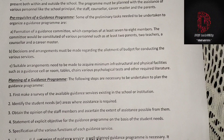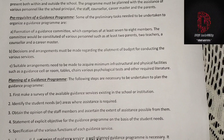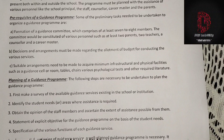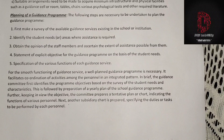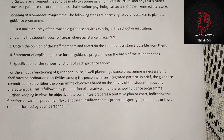Second, decisions and arrangements must be made regarding the allotment of budgets for conducting the various services. Third, suitable arrangements need to be made to acquire minimum infrastructural and physical facilities such as a guidance cell or room, tables, chairs, various psychological tests and other required literature. For planning a guidance program, the following steps are necessary: first, make a survey of the available guidance services existing in the school; second, identify the student needs or areas where assistance is required; third, obtain the opinion of staff members and ascertain the extent of assistance possible from them; fourth, statement of explicit objectives for the guidance program based on student needs.